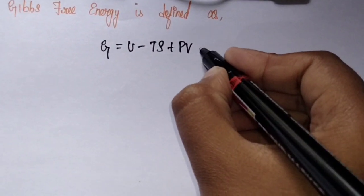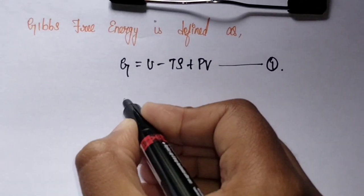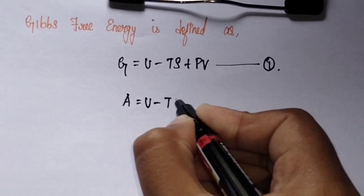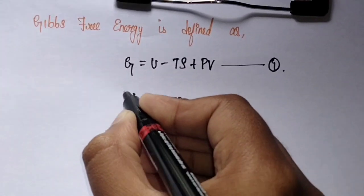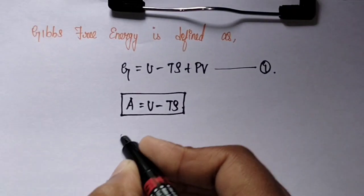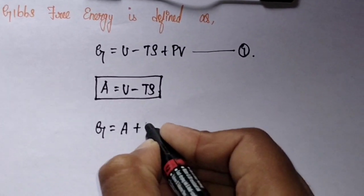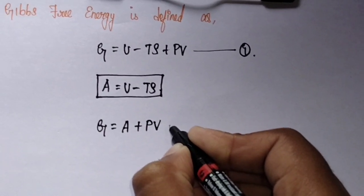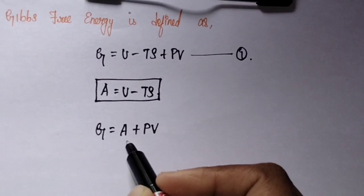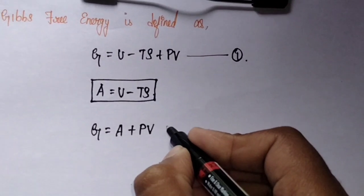From Helmholtz free energy we know A equals U minus TS. Substituting this in the above equation we get G equals A plus PV, where G is Gibbs free energy, A is Helmholtz free energy, P is pressure, and V is volume. Take this as equation number two.